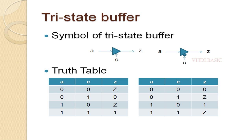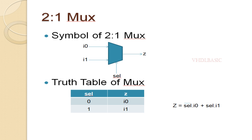I have given both truth tables here. The first one: whenever C is 1, the buffer is enabled, so whatever is present in A will be assigned to output Z. Whenever C is 0, output will be high impedance. Likewise for the second buffer: whenever C equals 0, whatever is present in A will be assigned to output Z; when C is 1, output will be assigned as high impedance. This is the simple diagram of the 2-to-1 MUX.